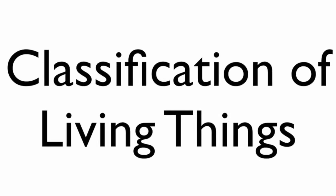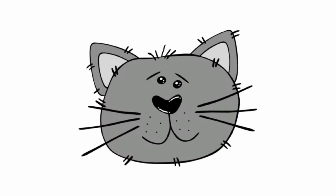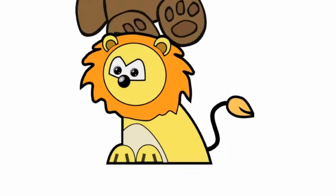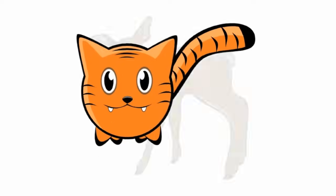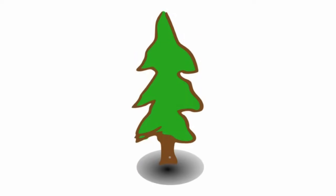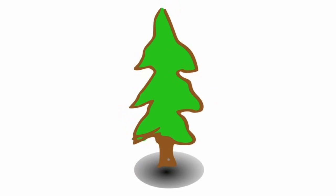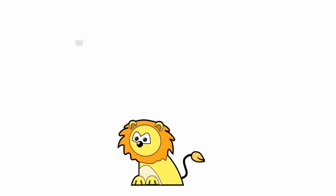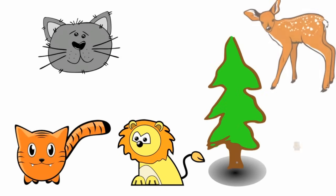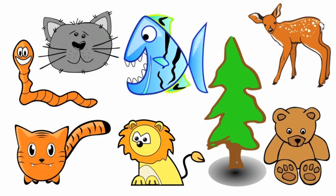Classification of Living Things. What do a worm, a cat, a fish, a bear, a lion, a tiger, a deer, and a tree have in common? They are all living things. With so many living things in the world, scientists have created a way to organize life into groups and give them names that are recognized worldwide.